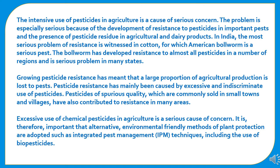The presence of pesticide residues in agriculture and dairy products is a serious problem in India. The most serious problem of resistance is witnessed in cotton, for which the American bollworm is a serious pest. The bollworm has developed resistance to almost all pesticides in many regions. Growing pesticide resistance has meant that a large proportion of agricultural production is lost to pests, mainly caused by excessive and indiscriminate use of pesticides, including spurious quality pesticides commonly sold in small towns and villages.